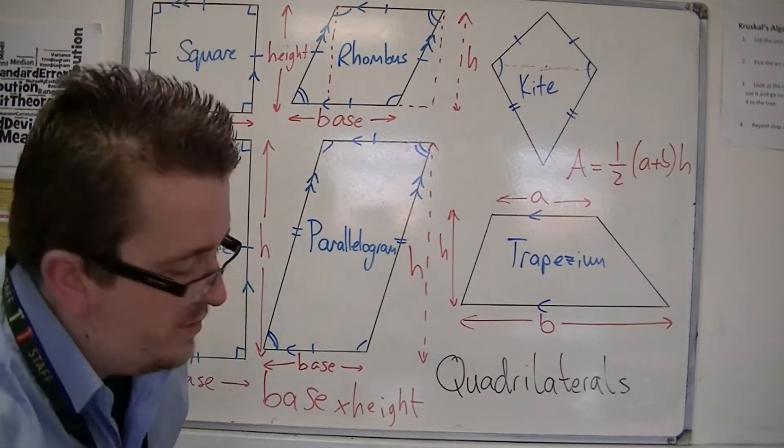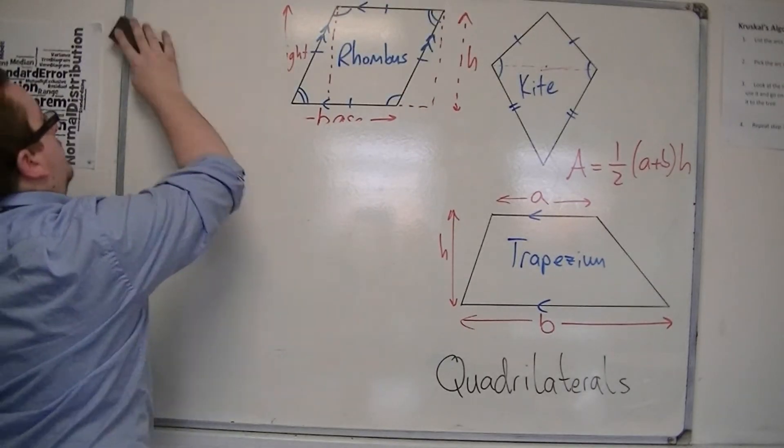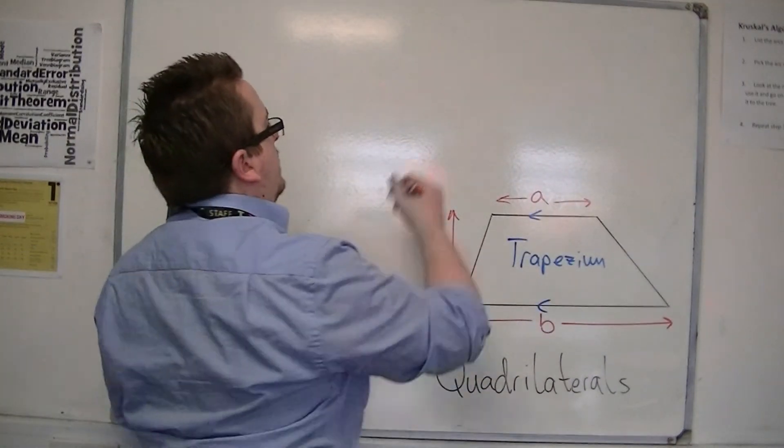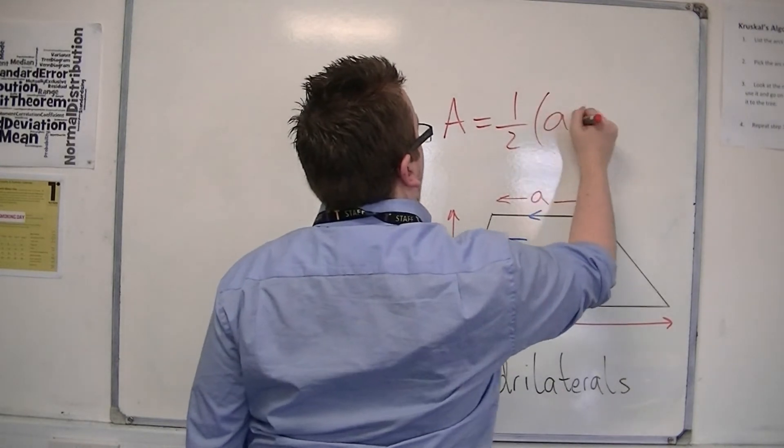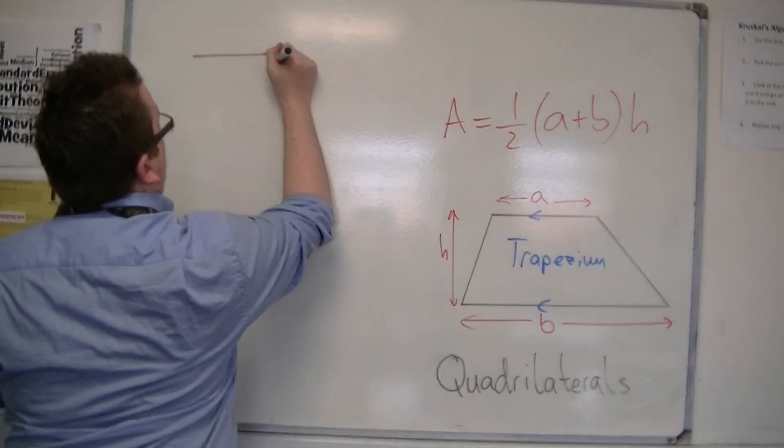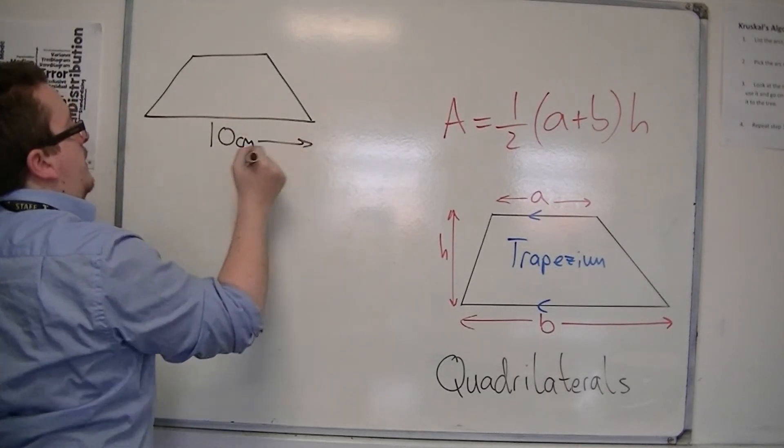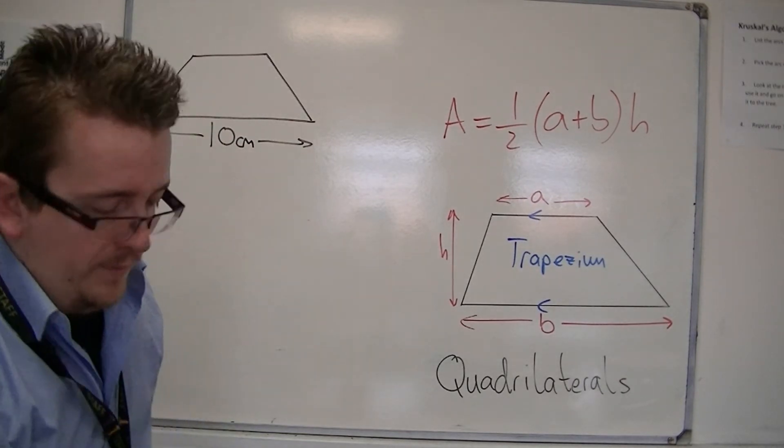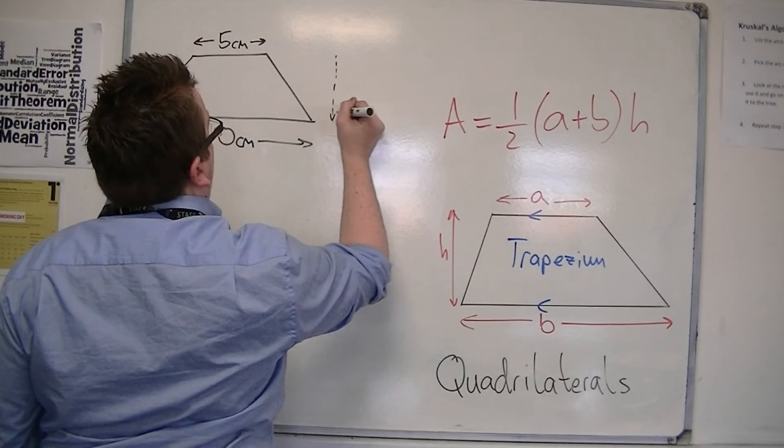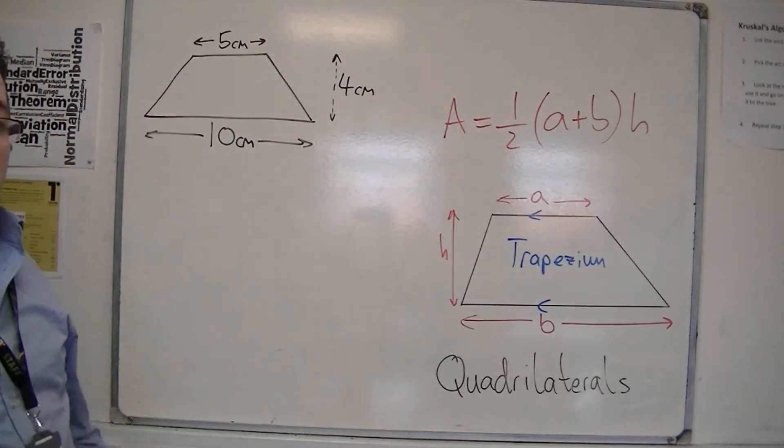So I'm going to take time now to show you how that works. Just to erase the formula, I'll rewrite that. So if you had a trapezium in a similar way to that, where you had a base of length 10cm, I'll change the pen because that's got quite squeaky, and let's say that's 5cm, and then it's got a height, an actual perpendicular height, of 4cm. Then if I needed to work out its area,